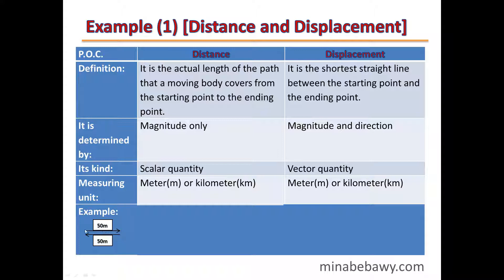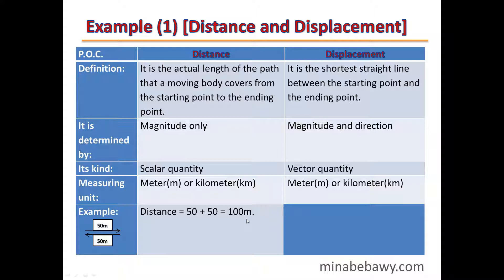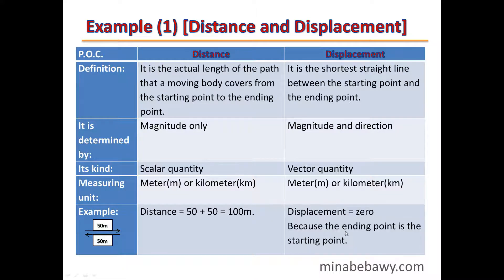Here's an example: an object moves east a distance of 50 meters, then returns back to its original position — another 50 meters. So this object covered 100 meters total distance, but its displacement is equal to zero, because the starting point and the ending point are the same.